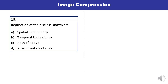Question 19: Replication of a pixel — you must have studied about replication and interpolation. Replication of a pixel is known as both spatial and temporal redundancy. C is the correct answer.